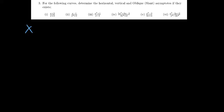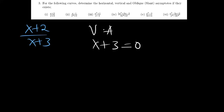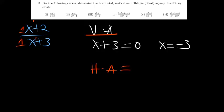Starting with the first case: x plus 2 over x plus 3. This is a case where the degrees are the same. For the vertical asymptote, equate x plus 3 to 0 — you find that x is equal to negative 3. For the horizontal asymptote, since we have the same highest power, we get the coefficients: 1 and 1. So the horizontal asymptote is y is equal to 1 over 1, which is 1.